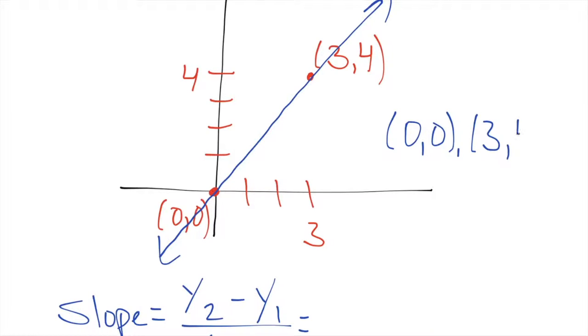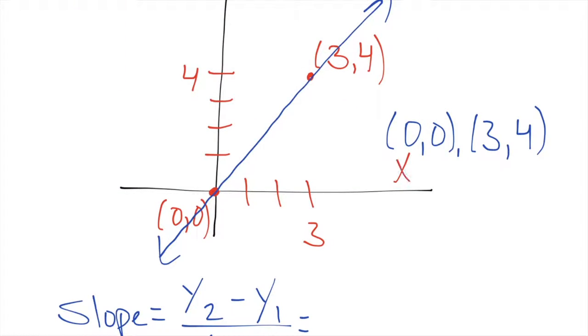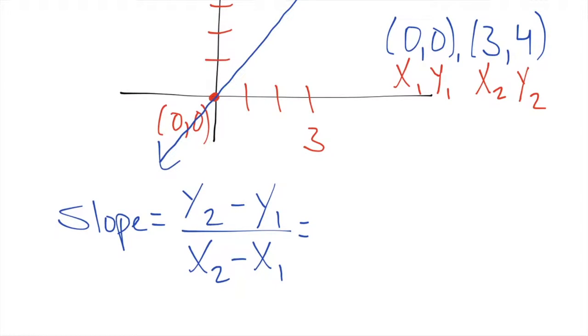Three comma four, and I'm going to go ahead and label them x₁, y₁, x₂, y₂. And now I just plug in the points.